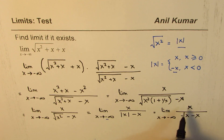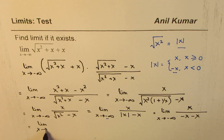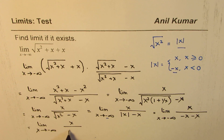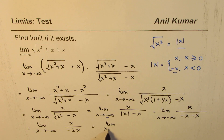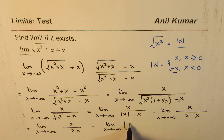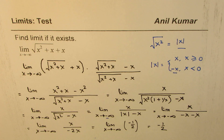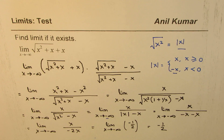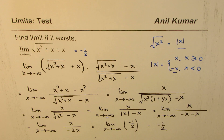We can simplify this and write: limit x approaches minus infinity of x over minus 2x. The x's cancel, and we get the limit of minus one half. This is just a constant, and therefore the answer is minus one half. So the limit of this function exists as x approaches minus infinity, and the answer is minus one half.